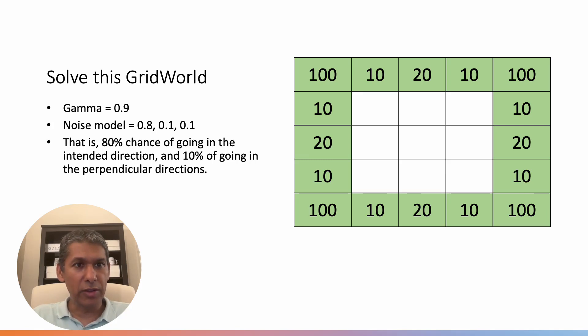Okay, so today we are solving this GridWorld, which is a Markov decision process MDP context. In this GridWorld, all of these states that are given, they are the terminal states.